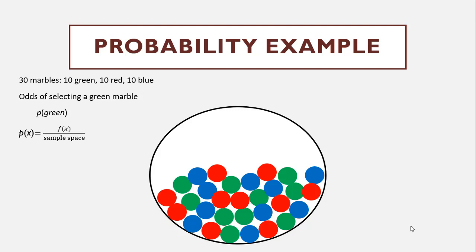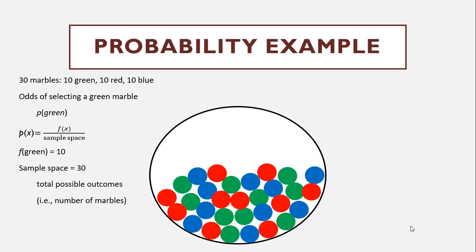There are 10 green marbles. So P(X), probability of green, is the frequency divided by the sample space. F(X), frequency of X, is 10; the total sample space is 30 — that's the total number of marbles we could pull. So the probability of green, given that there are 10 greens divided by 30 total marbles, is 0.3333. In this class, we round everything to four digits while working, then report two digits when putting answers in.